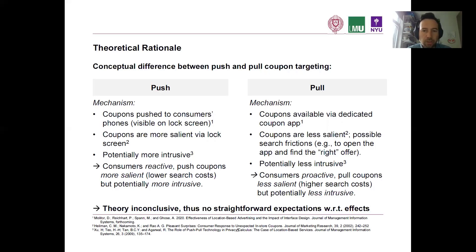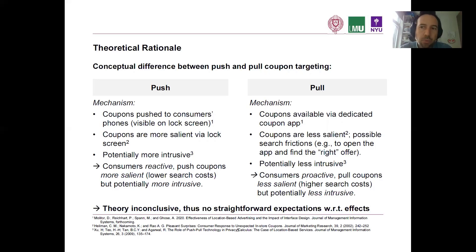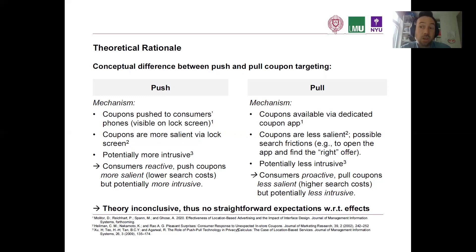In the case of mobile pull, you usually need a dedicated coupon app. When it comes to the delivery mechanism, you proactively have to go to the app, pull out your phone, and search for the content, the ad, the coupon you're looking for — which means there are more search frictions. But since you have full control over when and where to use the app, it's also less intrusive. To summarize: with pull, consumers are proactive, pull coupons are less salient with higher search costs, but they are also less intrusive. So we have a trade-off between intrusiveness and search costs versus salience, which doesn't yet allow clear predictions.